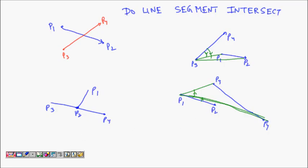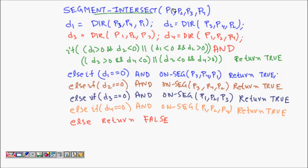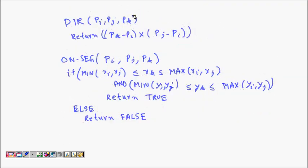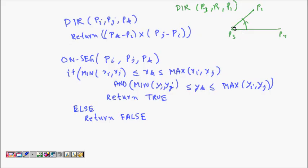The code has a function called segment-intersect taking points P1, P2 for the first segment and P3, P4 for the next. We compute four directions: D1 is the direction of P3 with respect to P1P2, D2 is the direction of P4 with respect to P1P2, D3 and D4 are directions with respect to P3P4. We use the cross product — if counterclockwise the result is positive; different signs indicate opposite sides.